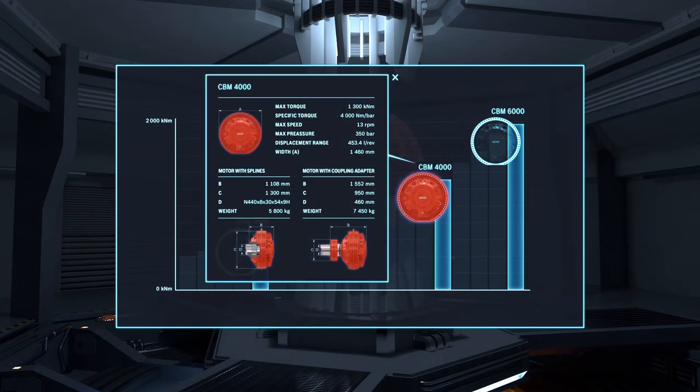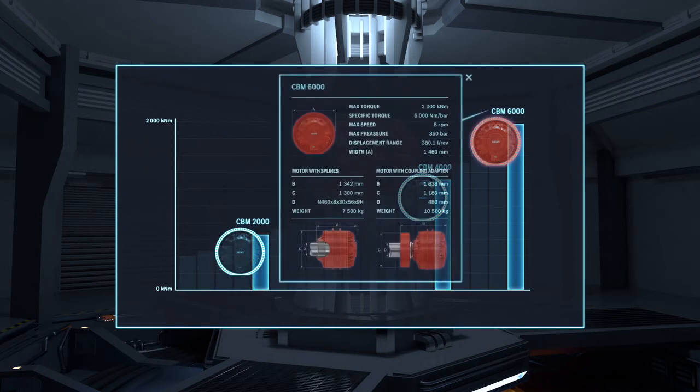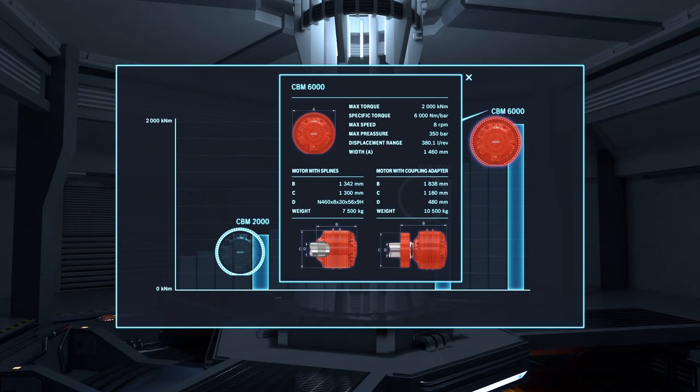The CBM 4000, which has a maximum torque of 1300 kNm, and the CBM 6000, which has a maximum torque of 2000 kNm.